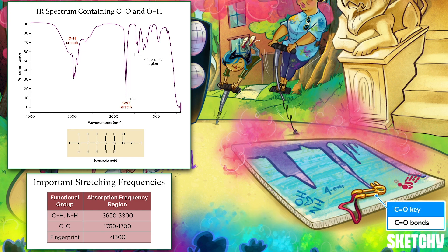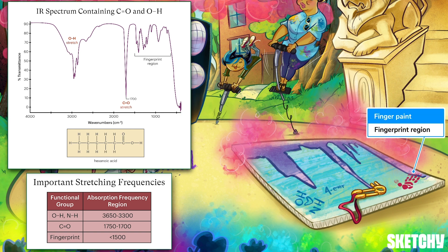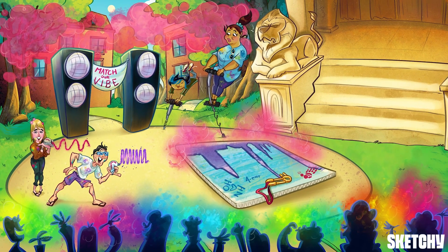Next, the C=O bond of a carbonyl appears with a nice tall sharp peak just about at 1700 wave numbers. The low wave numbers region of an IR spectrum — say, less than 1000 wave numbers — is called the fingerprint region. Like finger painting it's hard to interpret, but like a fingerprint, the specific collection of peaks and valleys is very individualized: no two compounds will have exactly the same set of peaks in the fingerprint region. That wraps up IR.